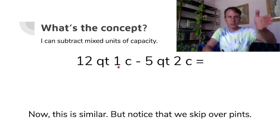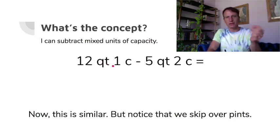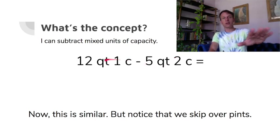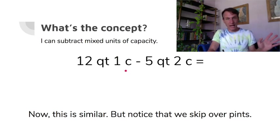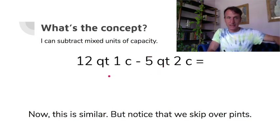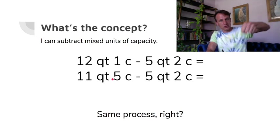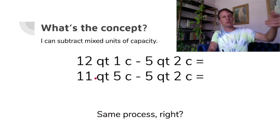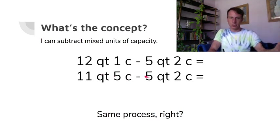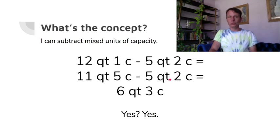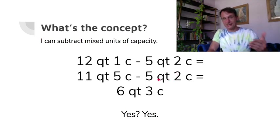Hopping over pints again: twelve quarts and one cup minus five quarts and two cups. We can't do one cup minus two cups — that's why we need to regroup. We don't always regroup: if it were twelve quarts and three cups, we could just subtract. Set aside eleven quarts, pour one quart into four cups — with the one cup already there, that's five cups. Then: eleven quarts minus five quarts is six quarts, five cups minus two cups is three cups. Answer: six quarts and three cups.